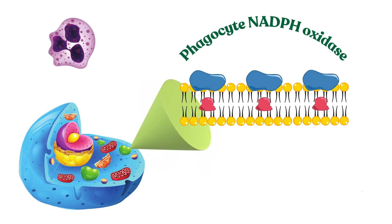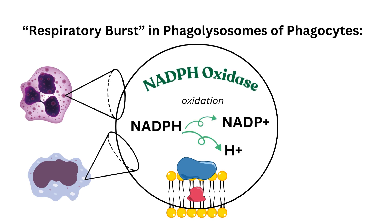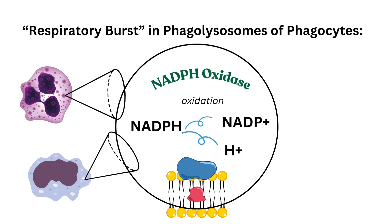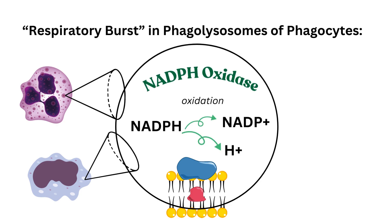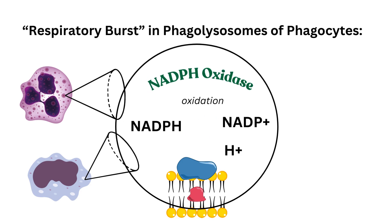Embedded within the cellular membrane of the lysosome is one of the key enzymes needed for killing foreign microbes, which is called phagocytic NADPH oxidase. Inside this tiny phagolysosome is where the respiratory burst occurs, where NADPH oxidase performs an oxidative reaction to pull a hydrogen from NADPH to form NADP+.